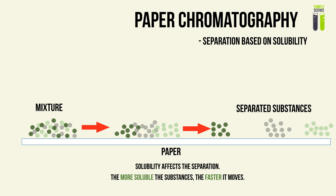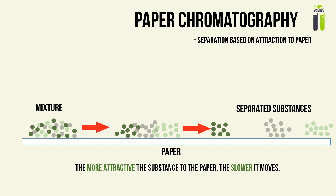The other factor affecting how well substances separate is attraction to the paper. The more attracted a substance is to the paper, the slower it will move. For example, pushing a block across a surface of oil compared to a surface of glue — the block moves much more easily across the oil because it has less attraction to the surface.